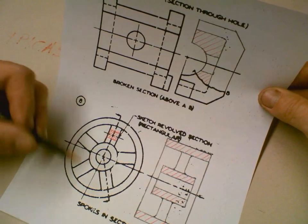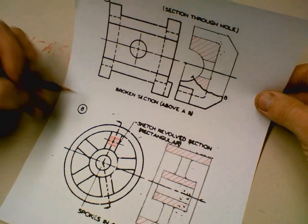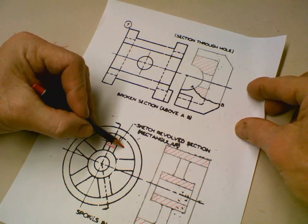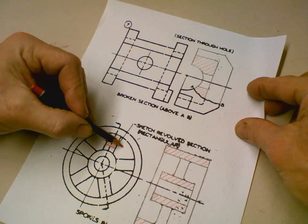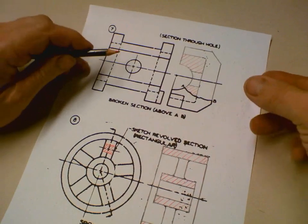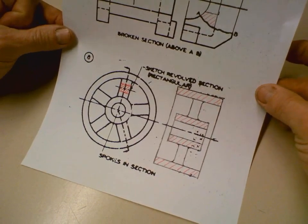See, if you cut longitudinally through it, you don't section. If you cut transversely through it, you do section it. So those are some of the rules on spokes, ribs, webs, and sections. So there's your final result for number eight.